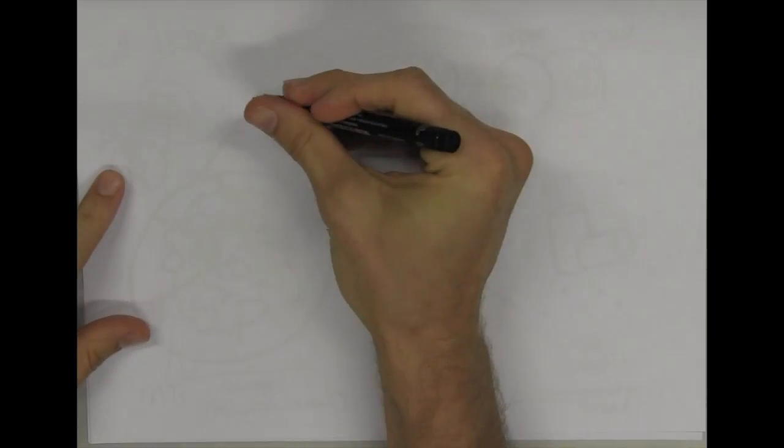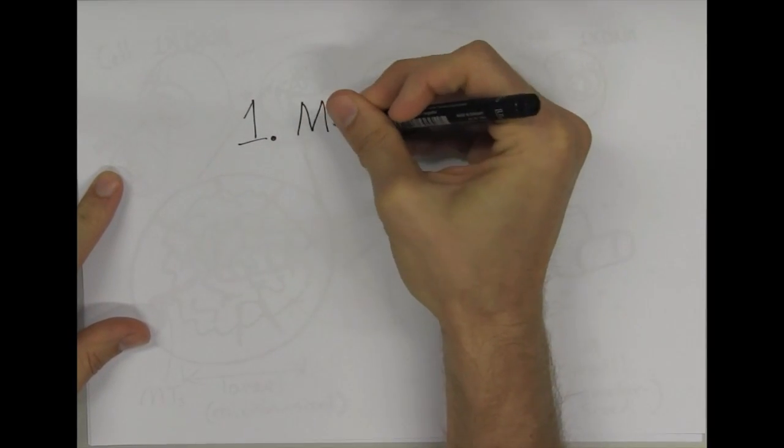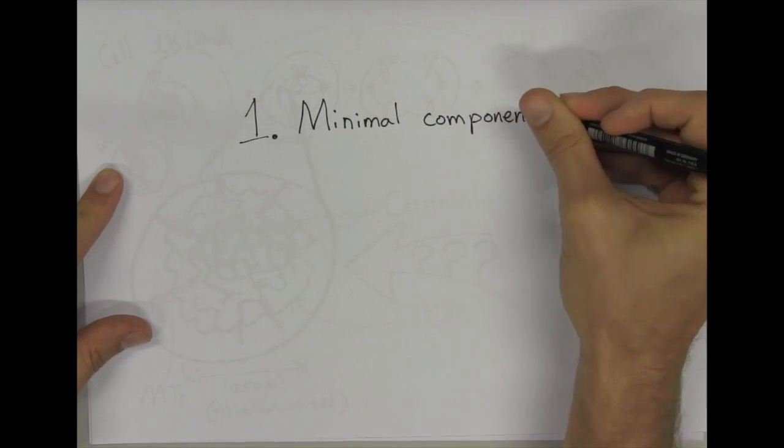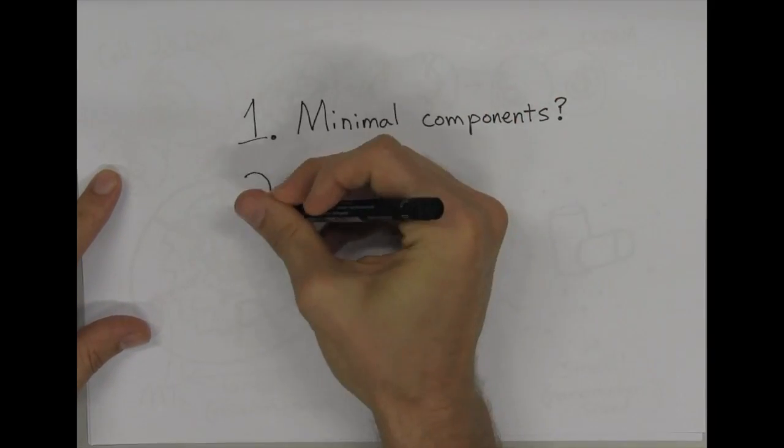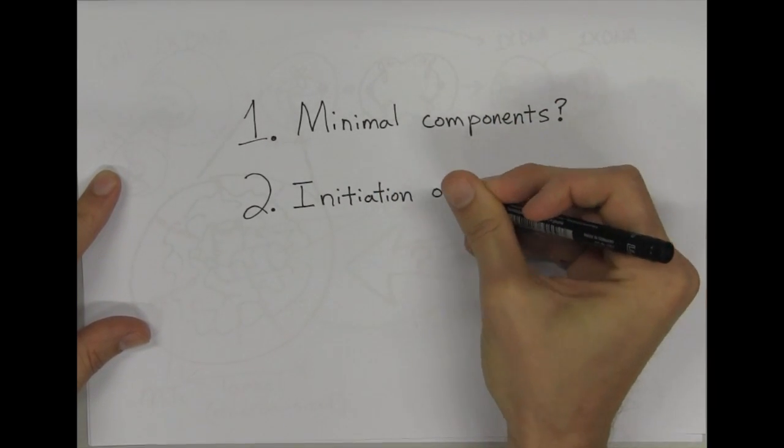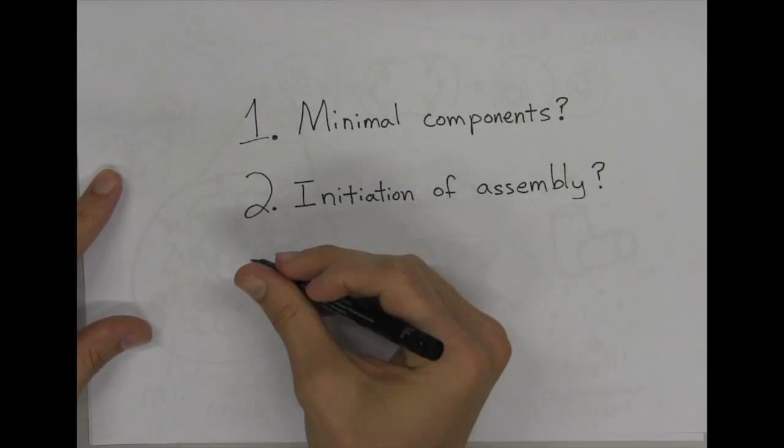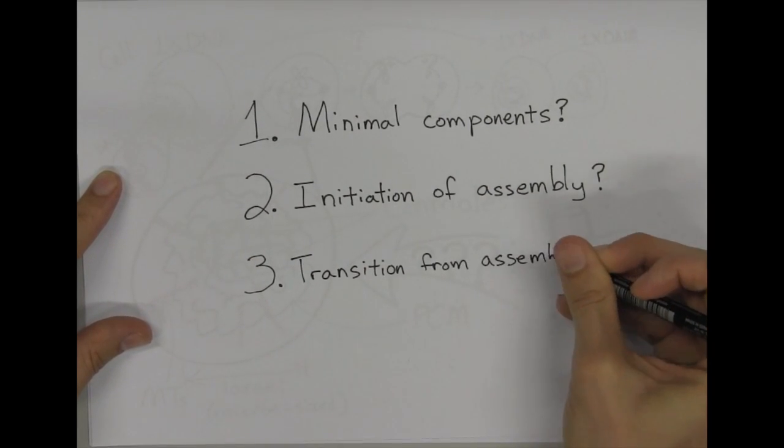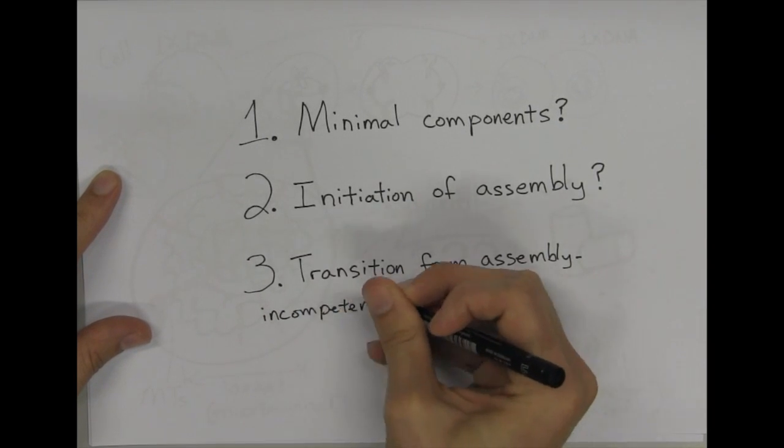With this system, I can hopefully address pressing questions like: What are the minimal components needed to form a micrometer-sized matrix? How is PCM assembly initiated? How do the starting proteins transition from an assembly-incompetent state to an assembly-competent state?